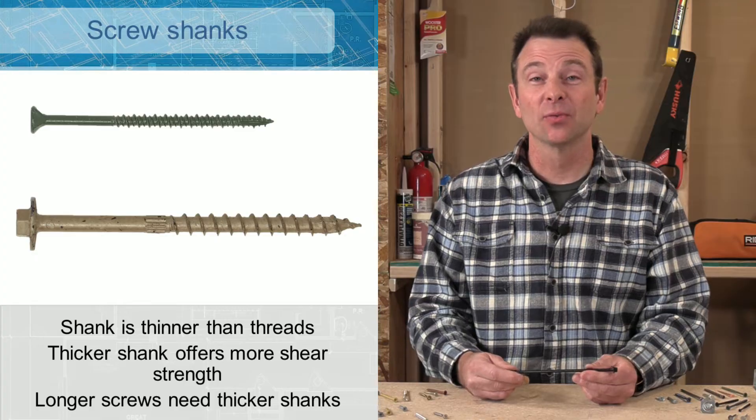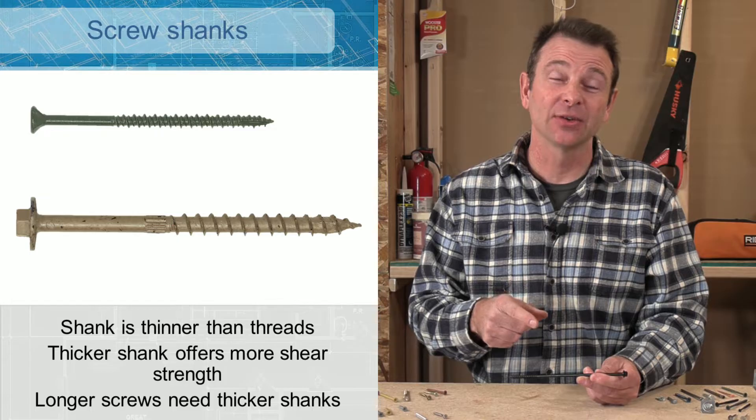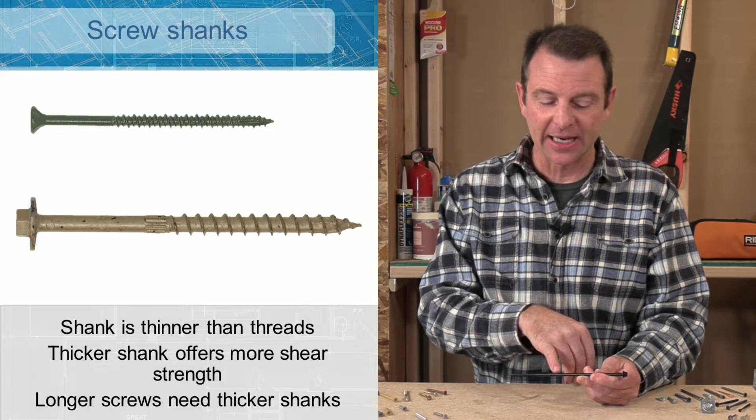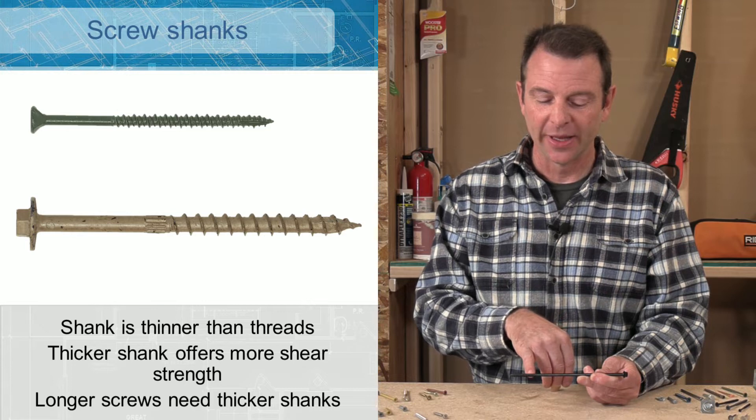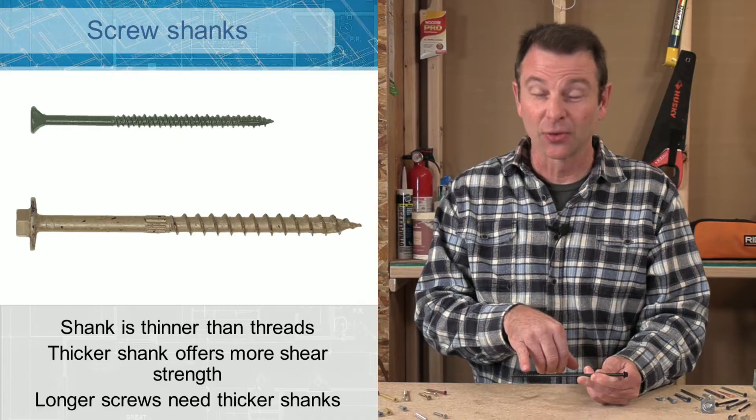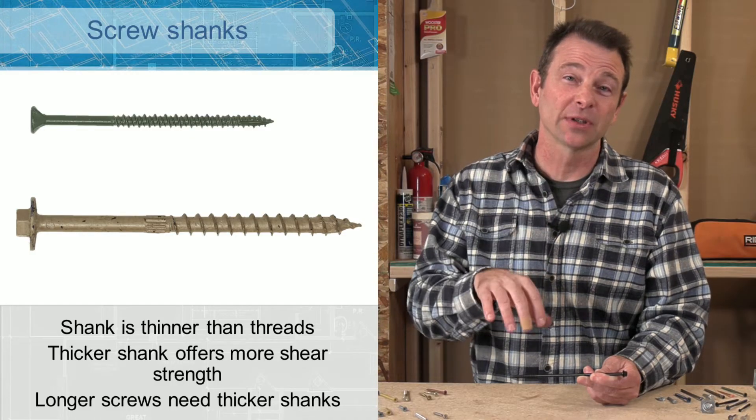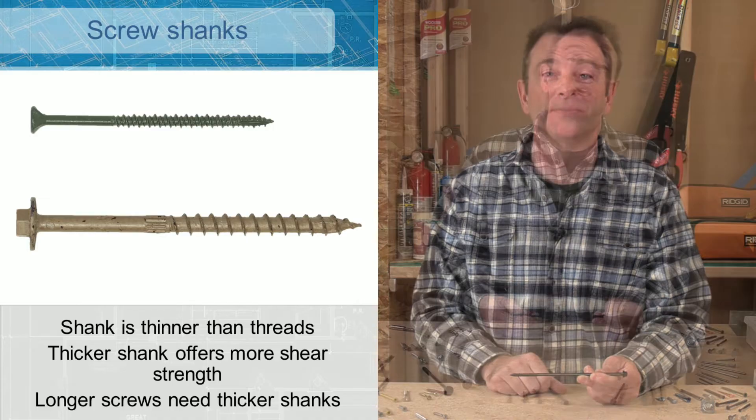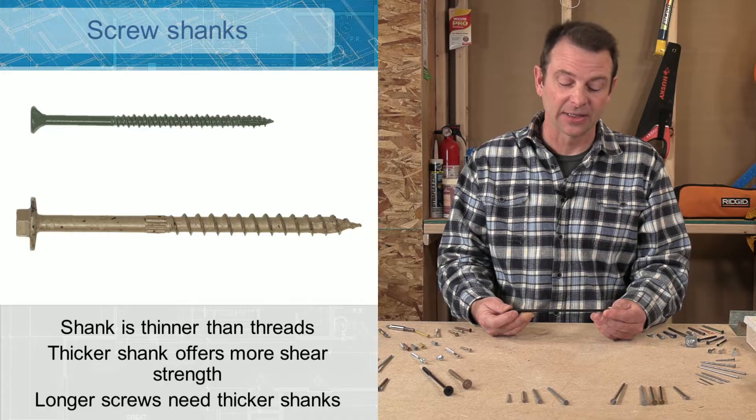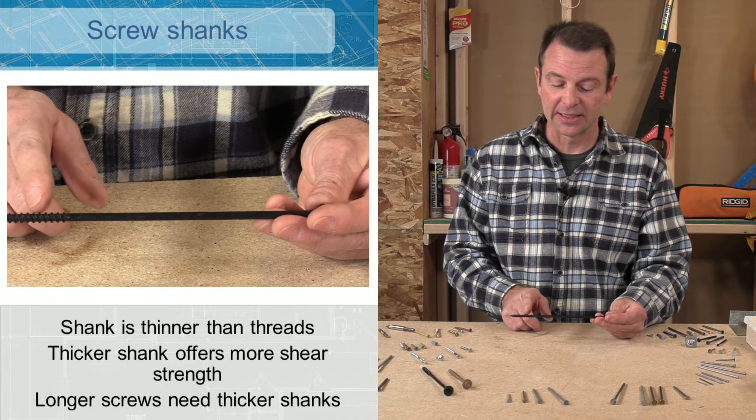The shank of the screw will change based on the strength needed from the screw. And we'll get into sizing of screws next. But keep in mind that the shank is thinner than the width of the threads. And that is made so that the threads give your gripping power and your shank is what's going to deliver or force those threads into the material. So if you notice, this is an exaggerated version, but not all of the shank has threads on it all of the time. This part of the shank is smooth and the threads only exist down here.